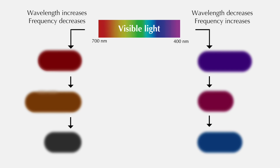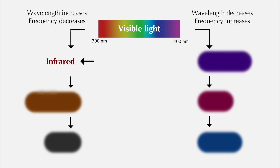The only fundamental differences between these types are differences in frequency and wavelength. Let's try decreasing the frequency of the radiation we observe and see what happens. We leave behind red light, the lowest frequency type of visible light, and enter the realm of infrared.